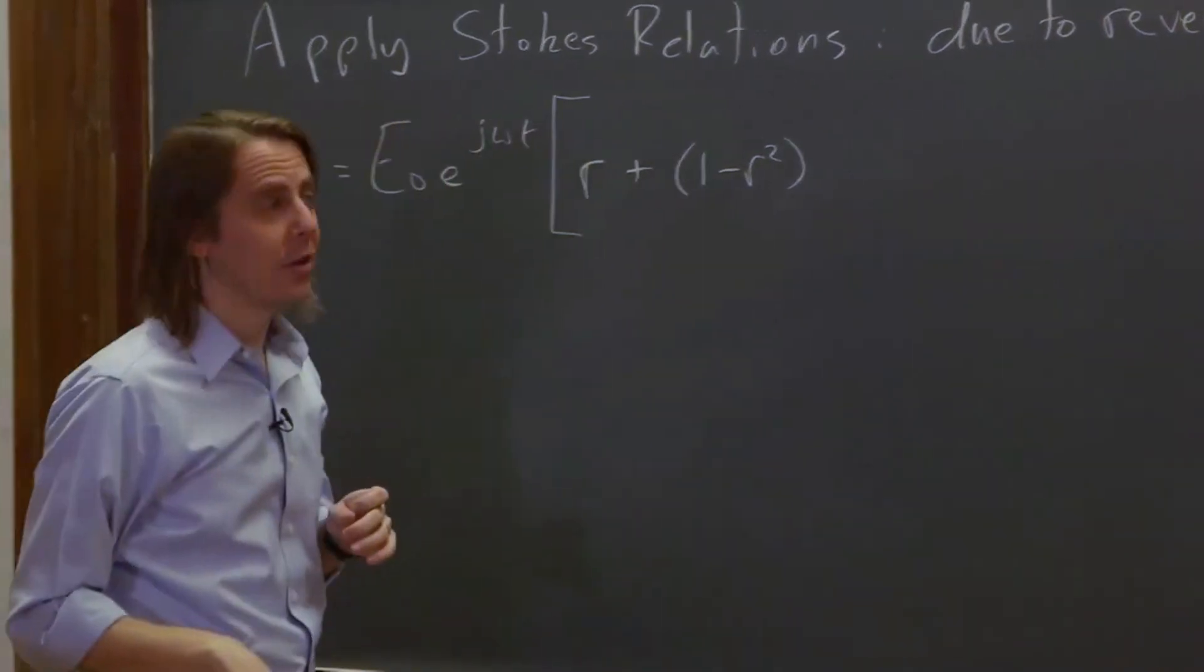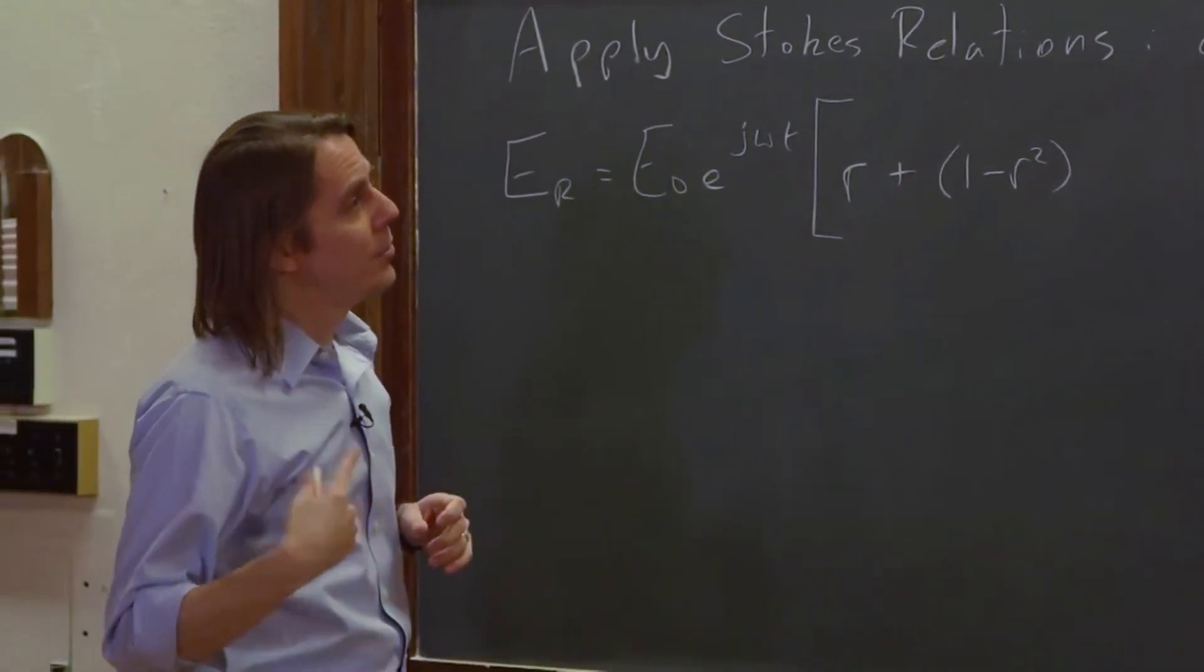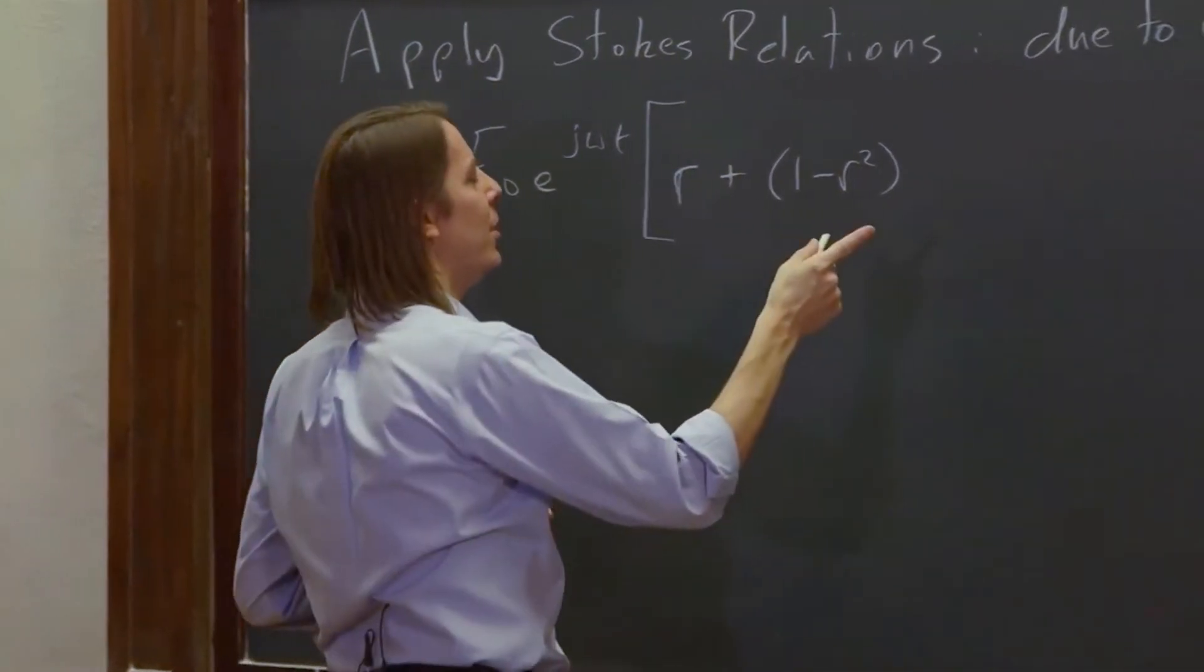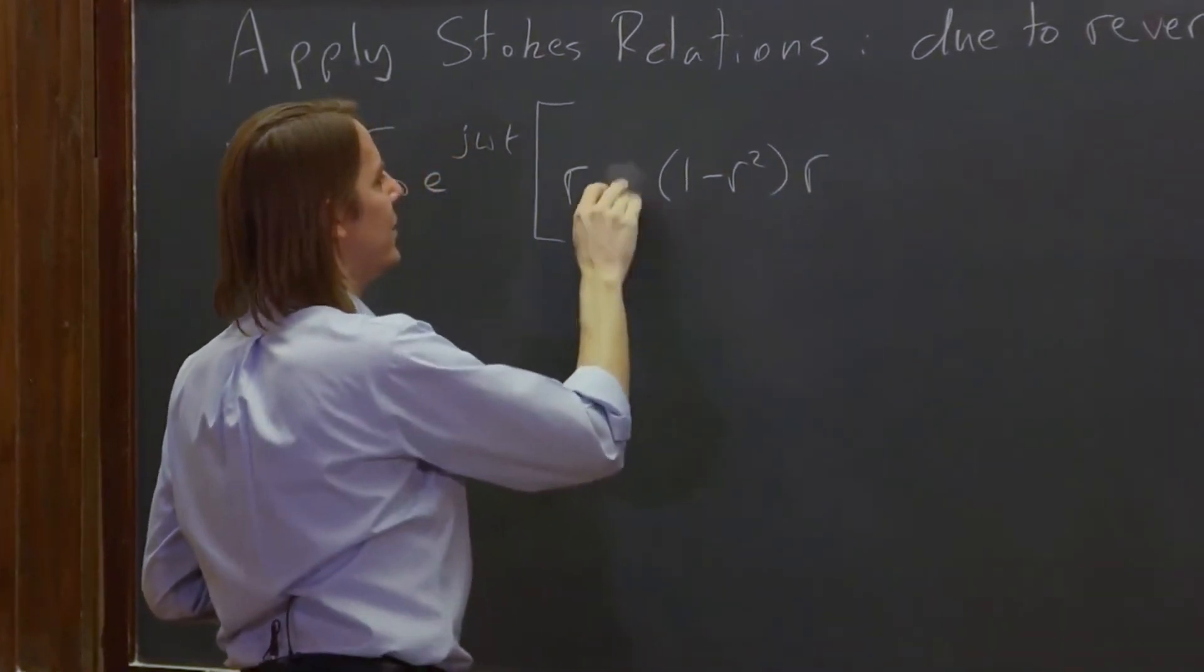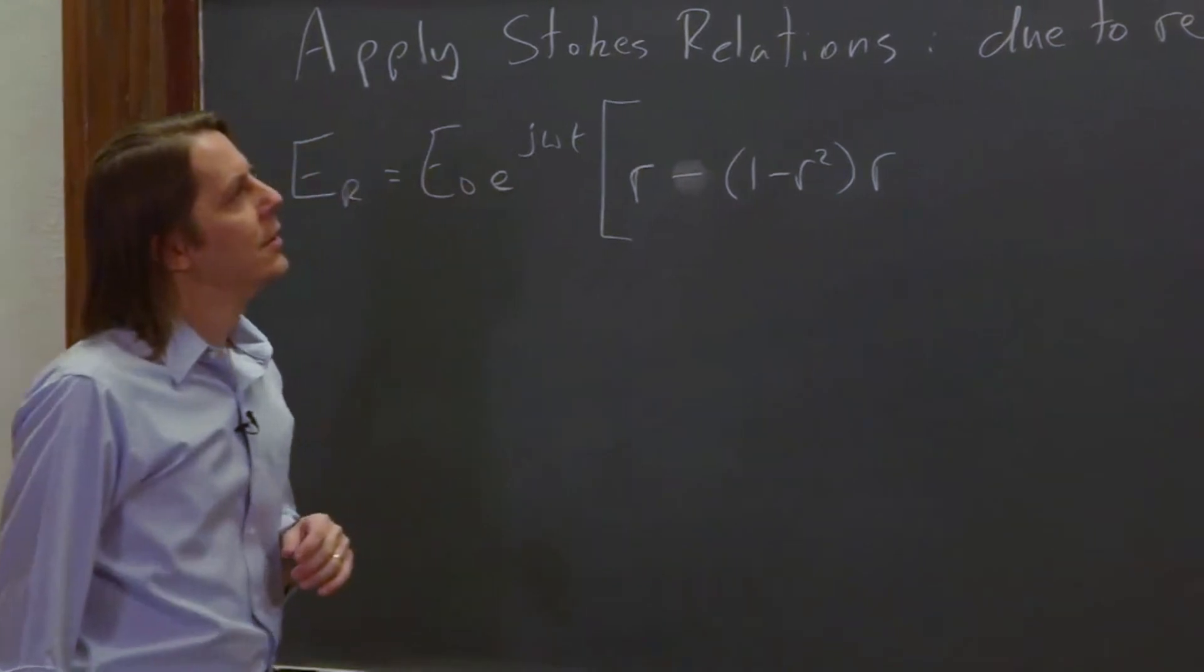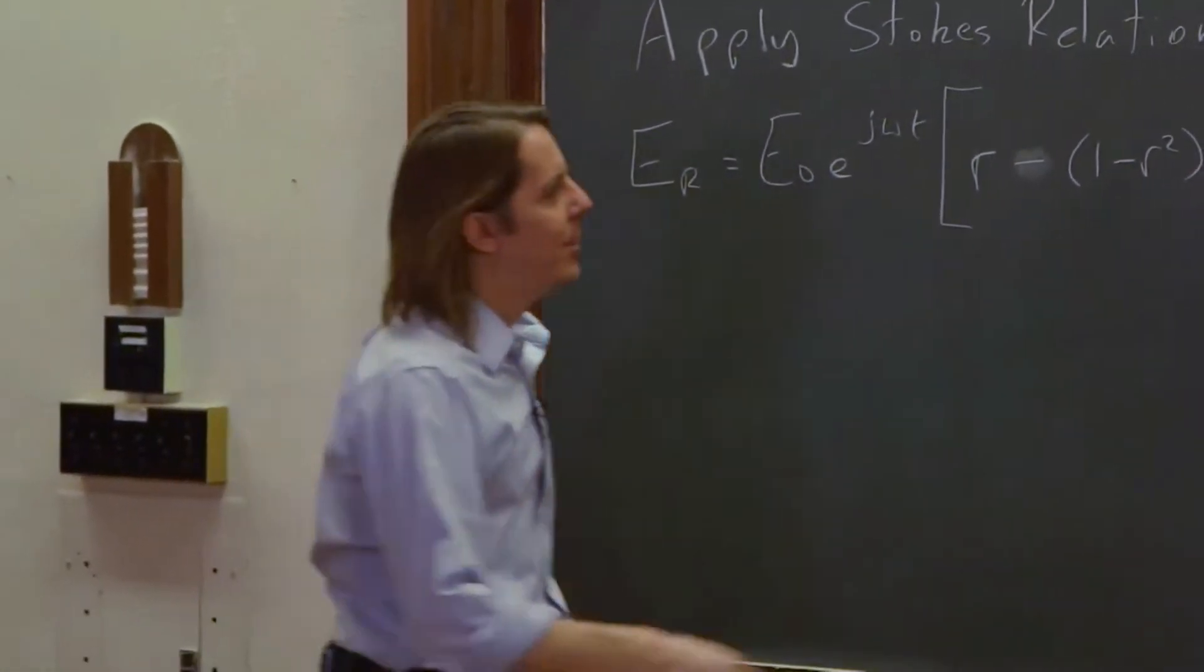And we're going to use the second one there. And then it was times r prime, but we're going to replace r prime with negative r. So we'll just write an r here instead of an r prime, and there's the negative sign. We'll stick it right there.